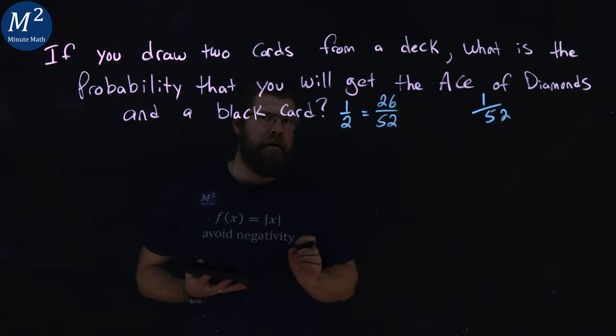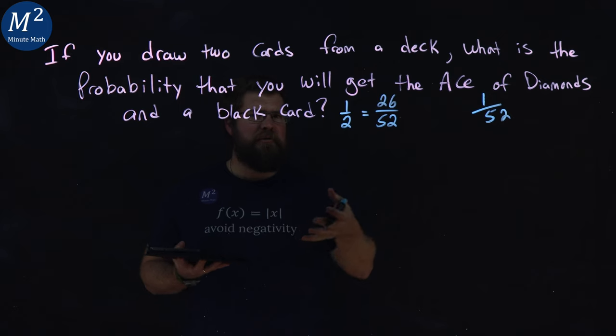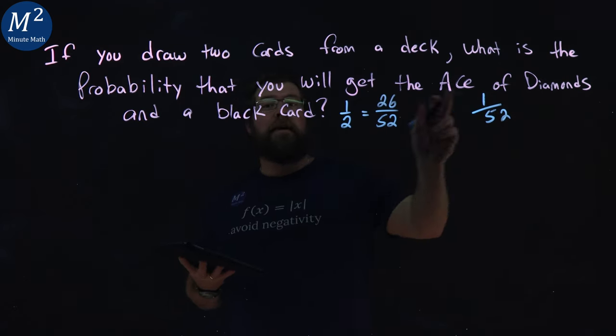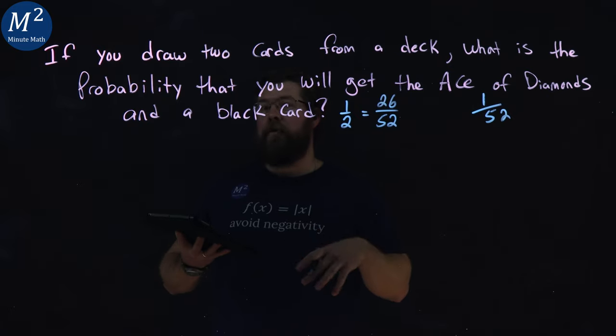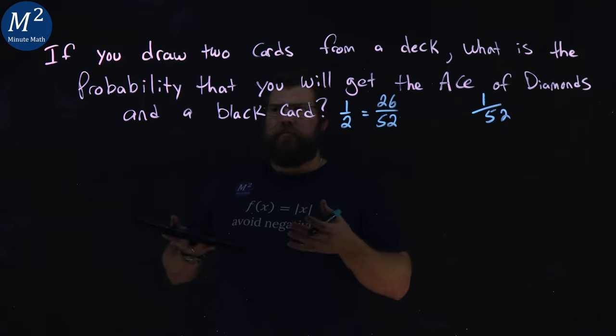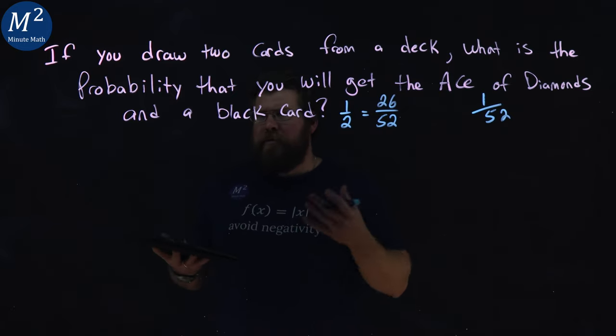Now, this one's a little tricky because order kind of matters. We have two different scenarios. We have one scenario where we draw the ace of diamonds first, then the black card, and flip that: black card first, and the ace of diamonds. So, let's go find each one of those out.